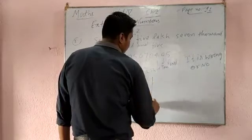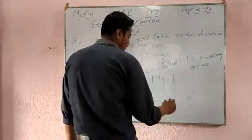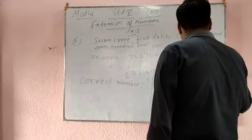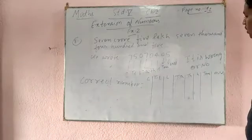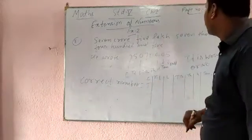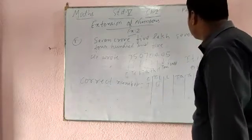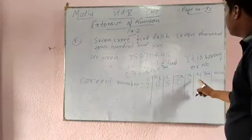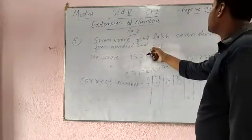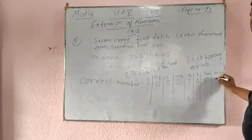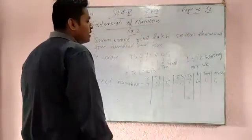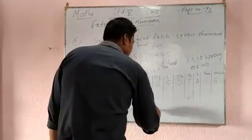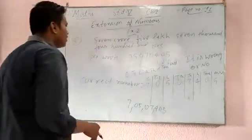Let me go through this again. We have crores, then 10 lakh, lakh, 10,000, 1000, 100, 10, 1. The first digit is 7 crores. After that it is 5 lakh — meaning 10 lakh is 0, so 5 lakh. After that 7,000 — so 10,000 will be 0. Then 400, then 5 at the ones place so 10s place is 0. So the right answer is 7 crore 5 lakh 7405.